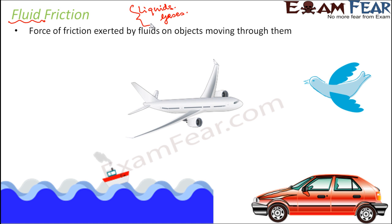A good example is an airplane flying through the sky, which is made of air — so the airplane is a solid moving through a fluid. Similarly, a bird flying in the sky is moving through a fluid, and a ship or boat moving through water is a solid moving through a fluid. Whenever an object moves through a fluid, that fluid offers some resistance to its motion, and anything that opposes motion is friction. This fluid friction is also known as drag.